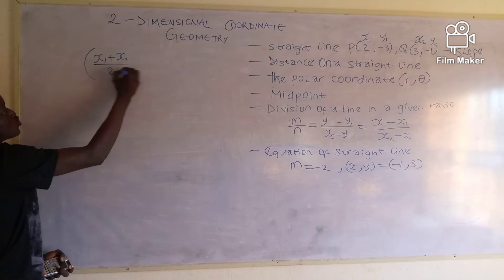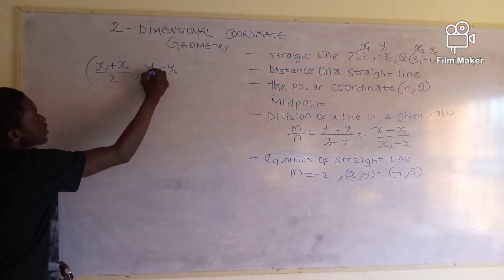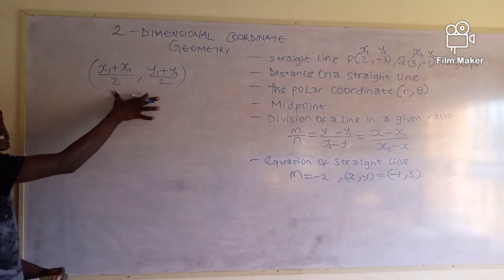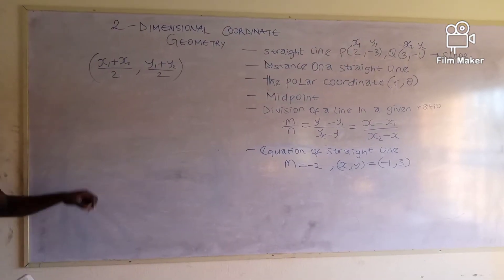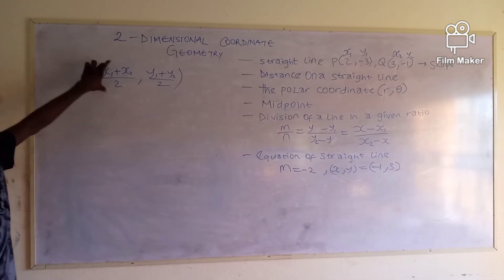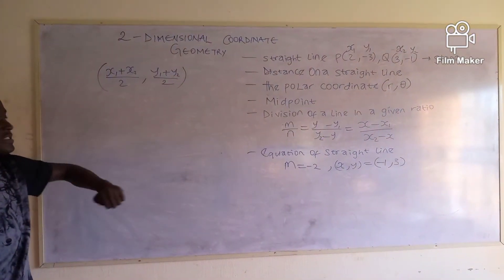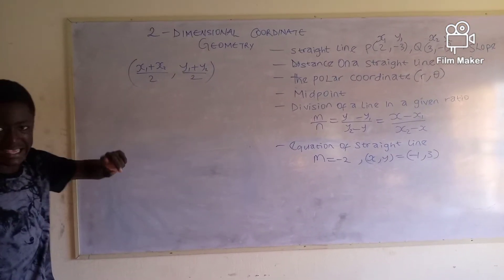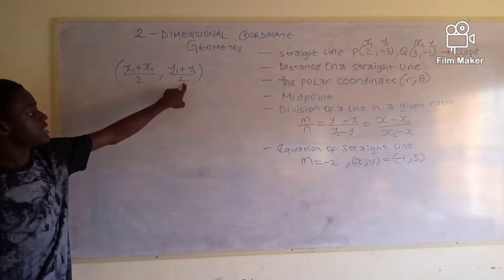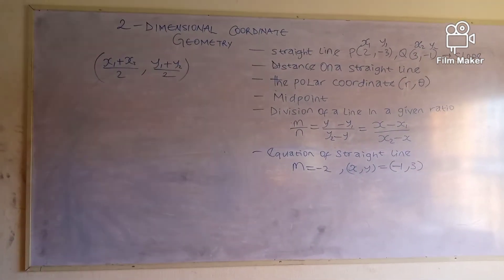The formula for midpoint is: ((x1 + x2) / 2, (y1 + y2) / 2). This is simply the average of the x-coordinates and the average of the y-coordinates, dividing the line exactly at the middle into two equal parts — that is what midpoint is all about.